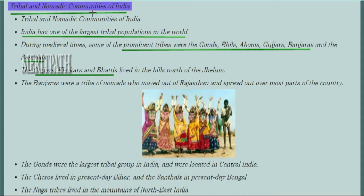India has almost the largest tribal population in the world. During the ancient period, tribes in India were known by names such as Gonds, Bhils, Ahoms, Gujars, Manjaras, and Santals. In the north of the Jhelam, they were known as Gujars, Kokars, and Bhatis. The Manjaras were a tribe of nomads who moved out of Rajasthan and spread to different parts of the country.